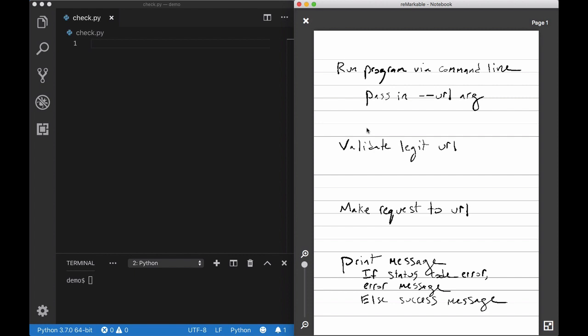So with a basic outline in place, let's start coding. Let's zoom in on that first item in the outline and pretend that the others don't even exist. Run program via command line, pass in